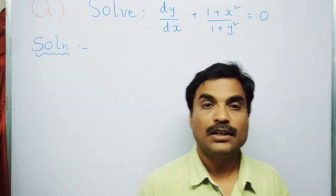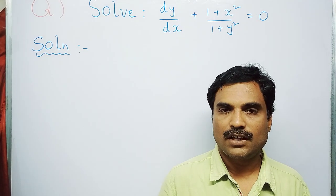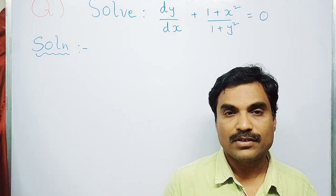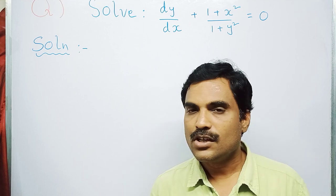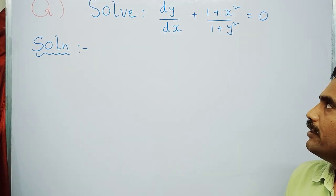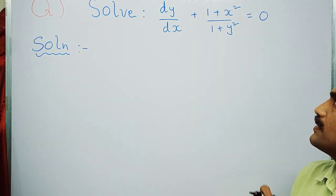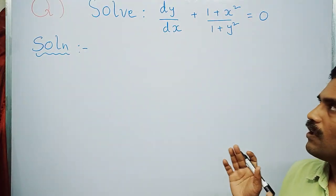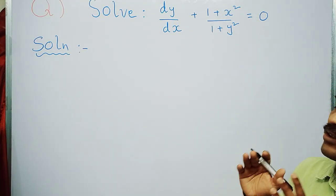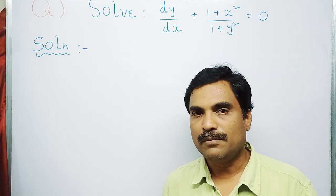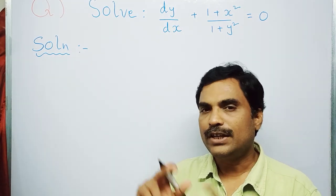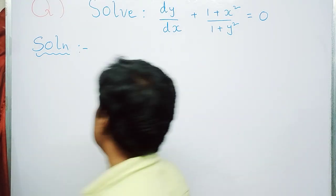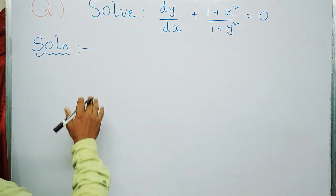Welcome to my channel Yanam Takshasila. In this new video I'm going to solve a mathematical problem under standard differential equations. The problem is: solve dy/dx plus (1 + x²)/(1 + y²) = 0. To solve this problem, first we use the variable separable method, and after that we integrate on both sides to get the final solution. Step number one: write what is given.